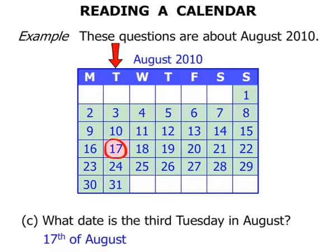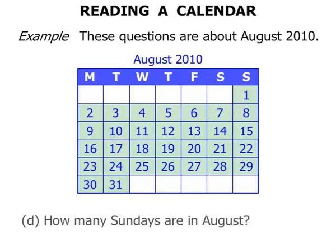How many Sundays are in August? We're looking at the Sunday column: one, two, three, four, five. There are five Sundays in August 2010. That doesn't mean there's five Sundays in every August, but certainly in 2010, five.